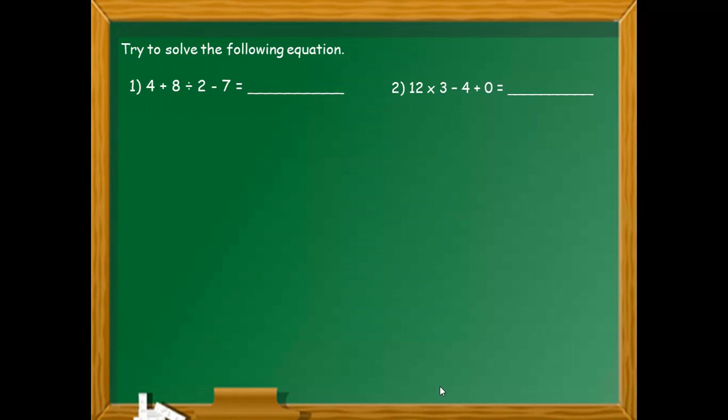Subukan natin sagutin ito by number 1. So rule number 1: 8 divided by 2 is 4. Kinopi natin na 4 plus 4 minus 7. Rule number 2: I-add natin si 4 plus 4. 4 plus 4 is equals to 8, and 8 minus 7 is equals to 1.